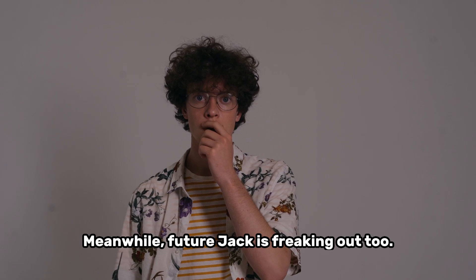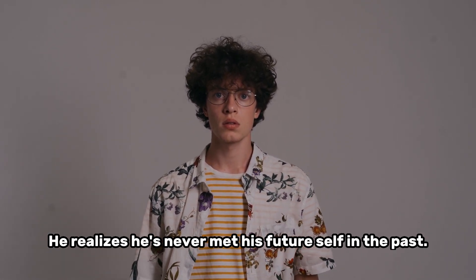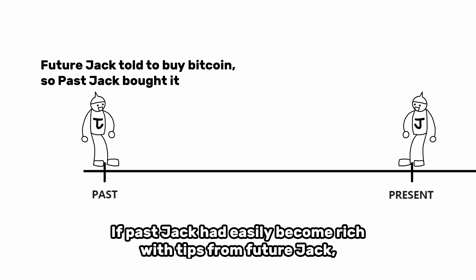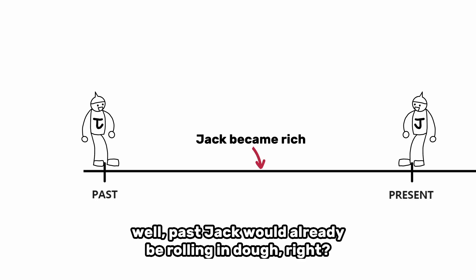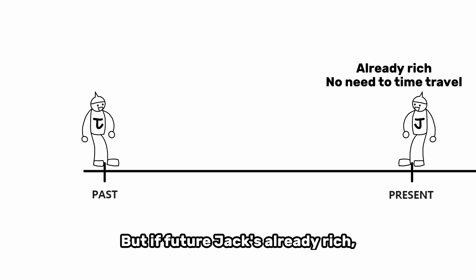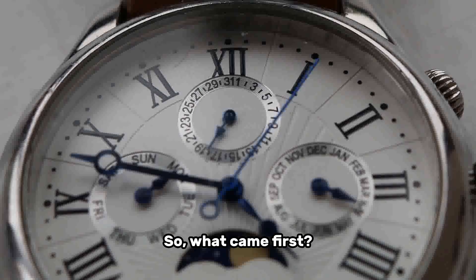Meanwhile, future Jack is freaking out too. He realizes he's never met his future self in the past. If past Jack had easily become rich with tips from future Jack, well, past Jack would already be rolling in dough, right? But if future Jack's already rich, he wouldn't need to time travel to the past. So, what came first?